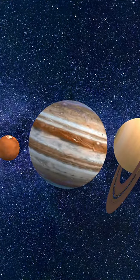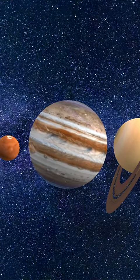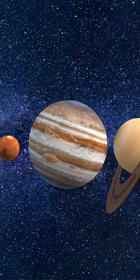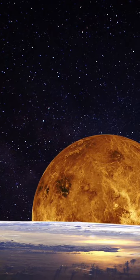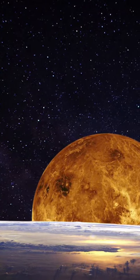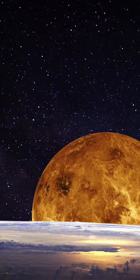Nicknamed the Swift Planet, Mercury zips around the Sun in just 88 days, a speedy celestial marvel. Its iron core makes up about 75% of its total diameter, a structure that's unique among the planets.